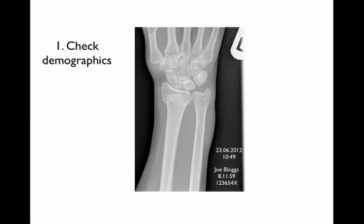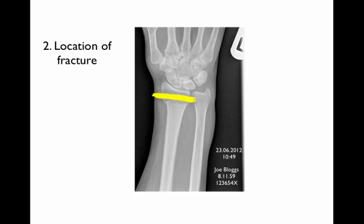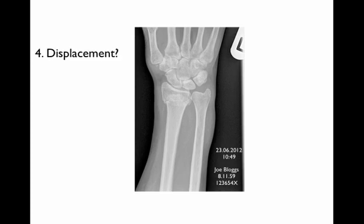Now we'll put this all together with some common examples. First, we check the demographics: this is a wrist x-ray of Joe Bloggs, taken on the 23rd of June 2012 in the morning. The location of the fracture is the patient's left wrist, in the distal third of the radius. The type of fracture is transverse. To accurately describe any displacement, ideally you should have a second view, as in this case.